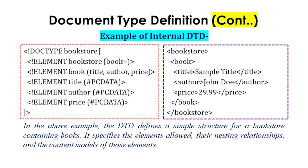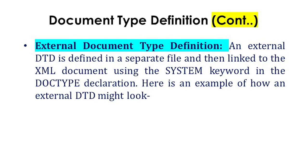The internal DTD is defined directly within the XML document and enclosed within the doc type declaration at the beginning of the document. With the help of an example, we will elaborate how an internal DTD looks or might work. This example shows a bookstore structure declared within the HTML/XHTML document. The DTD defines a simple structure for a bookstore containing books, specifying the elements allowed, their nesting relationship, and the content model of those elements.